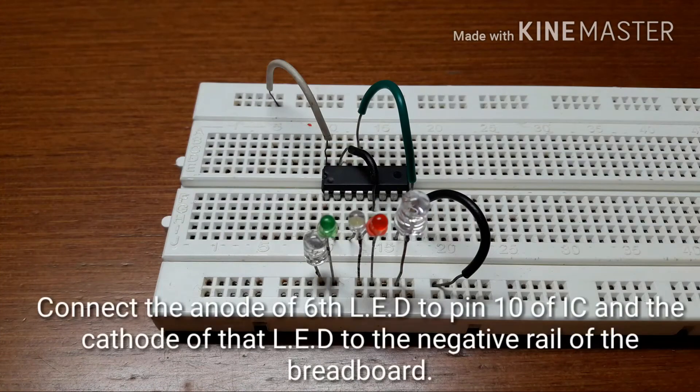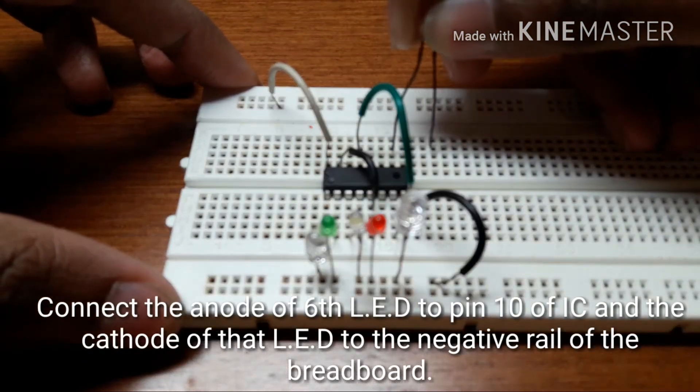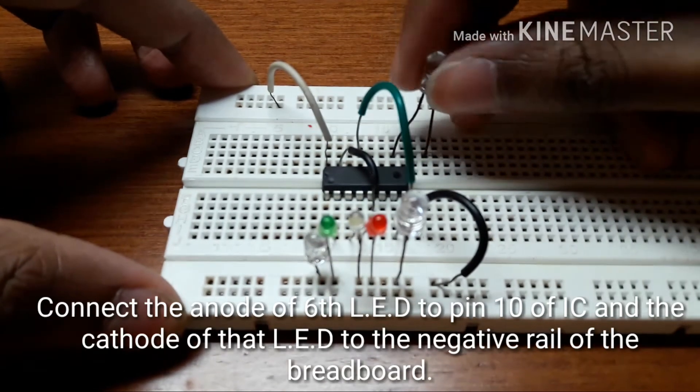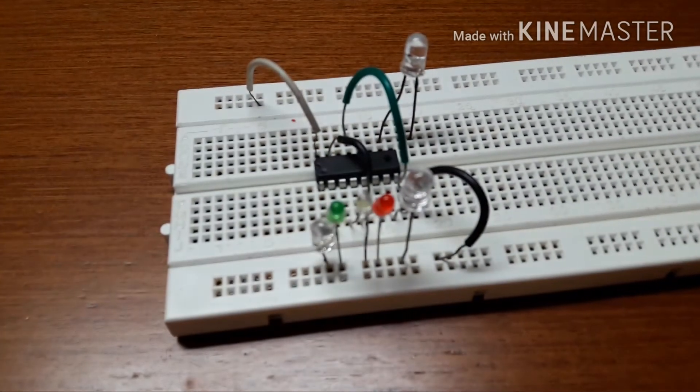Now let us insert the 6th LED. Connect the anode of the 6th LED to pin number 10 of IC and the cathode will go to the negative rail.